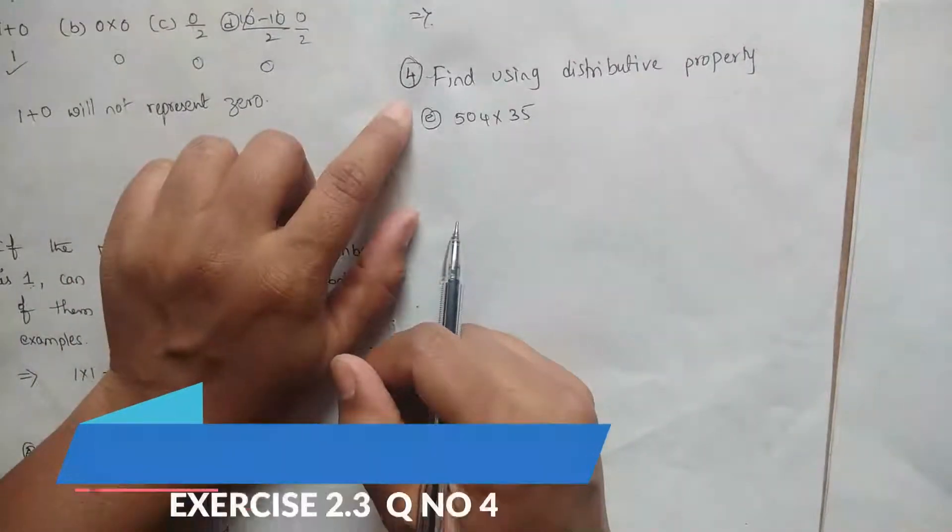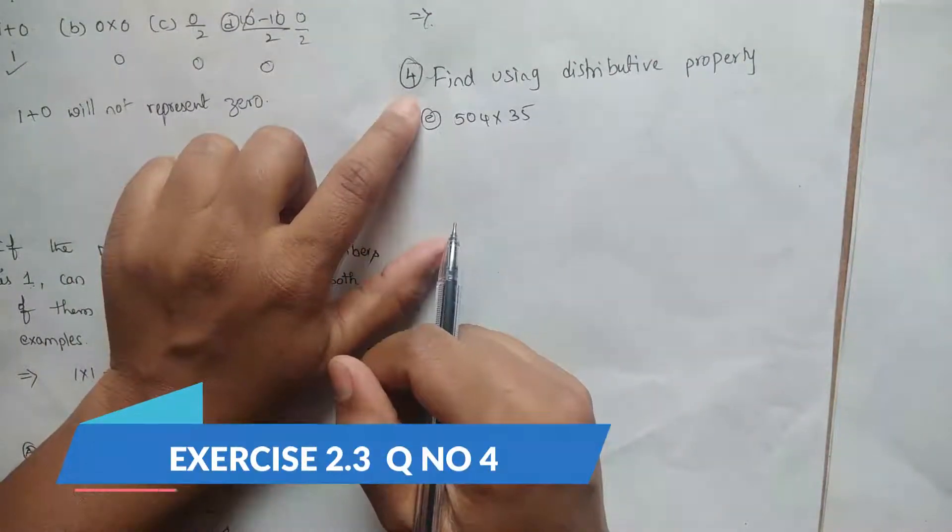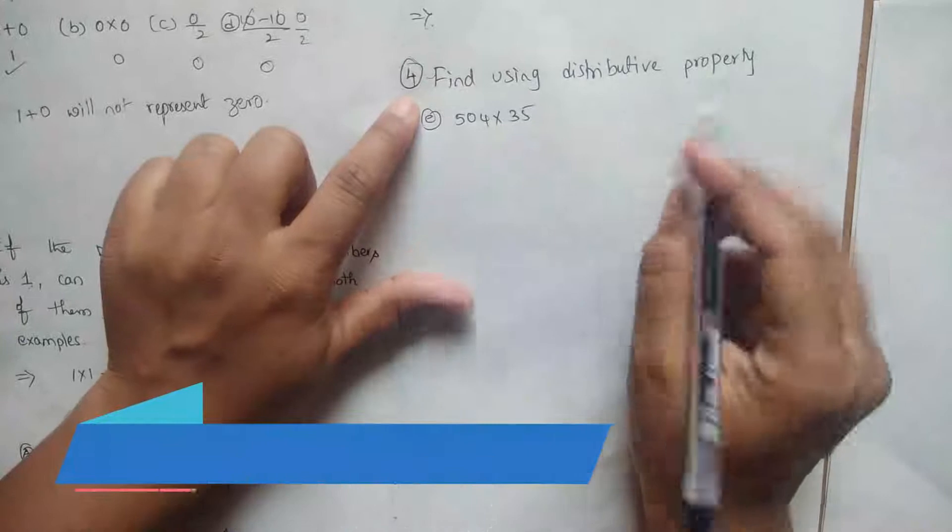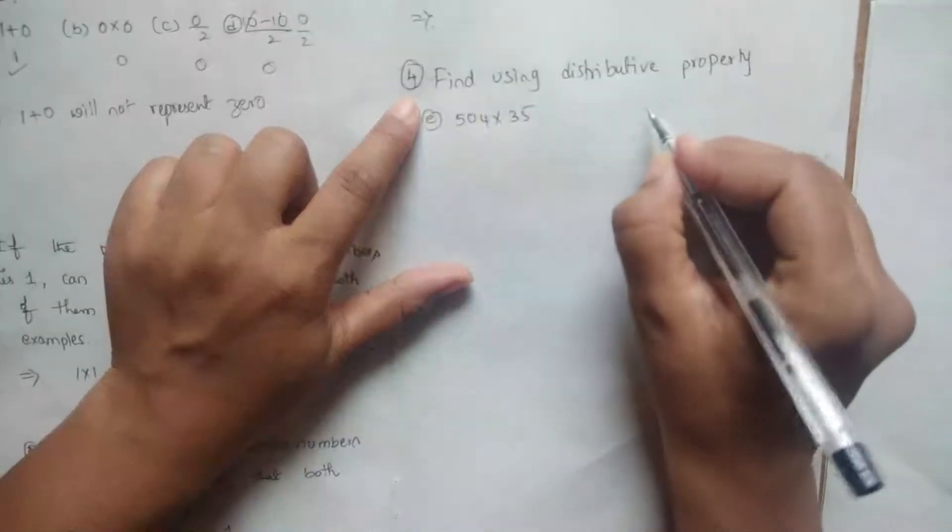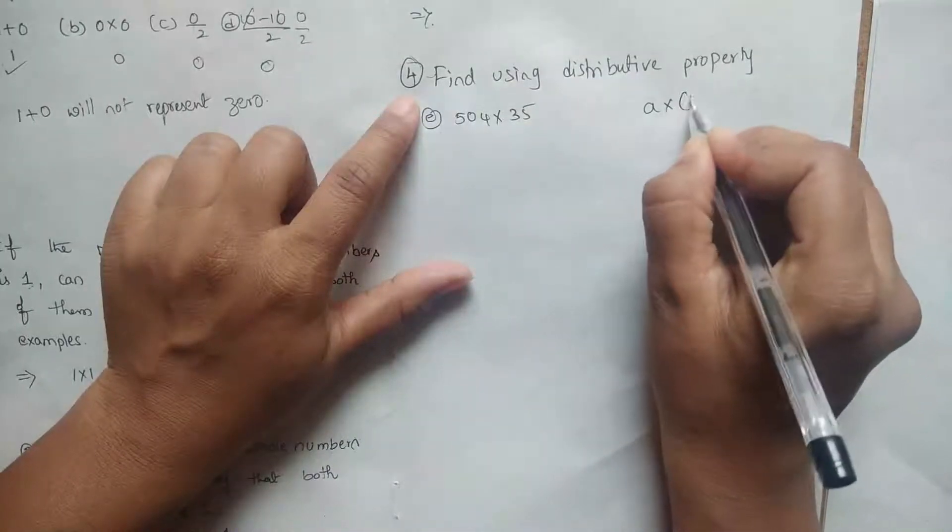I came with another problem from the same exercise. Find using distributive property. What is meant by distributive property is A into B plus C.